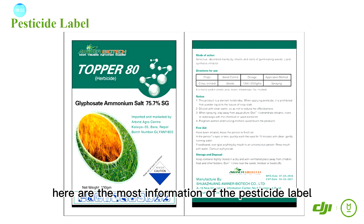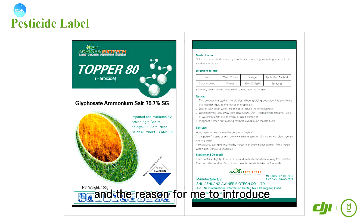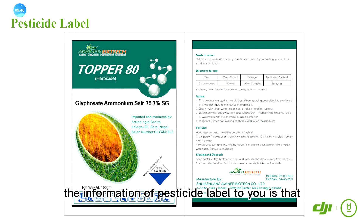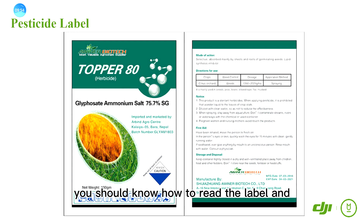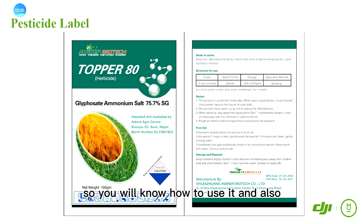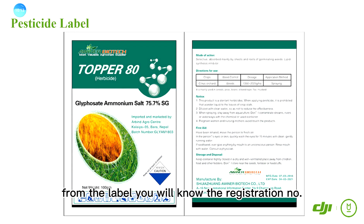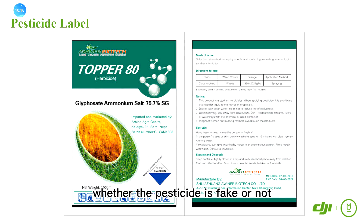You should know how to use a pesticide label. The reason I introduced this information is that you should know how to read the label and get the most useful information about a given pesticide, so you will know how to use it correctly. Also from the label, you will find the registration number, from which you can check whether the pesticide is fake or not. That's all for today.